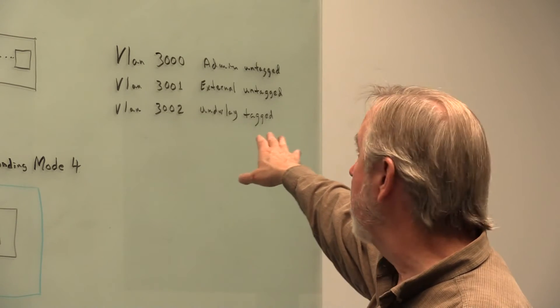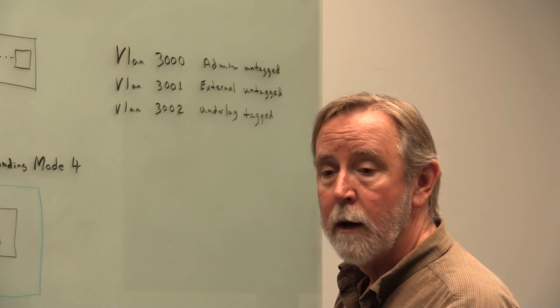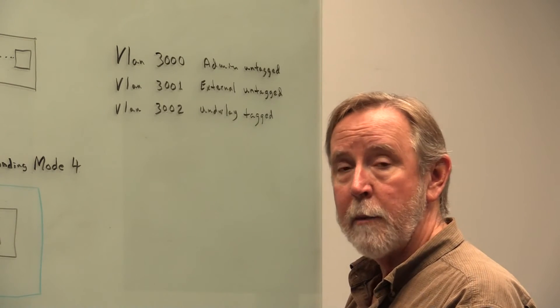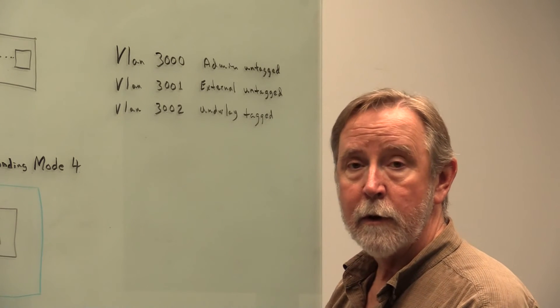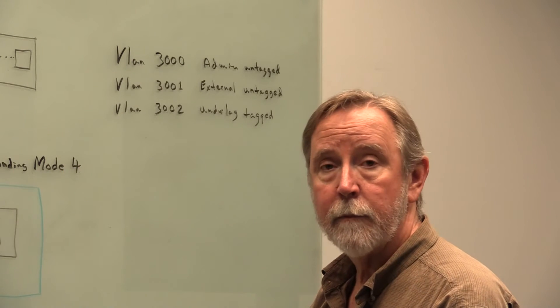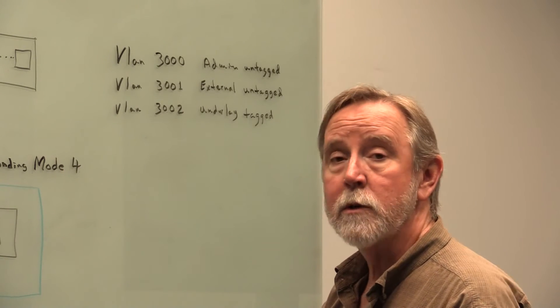There's the external VLAN we created, it's also untagged, we just named it 3001. That, of course, as the name applies external, is to give you external access to the containers, even SmartOS, which is part of the underlying OS for Triton, to give it access to the outside world, which is a prerequisite.